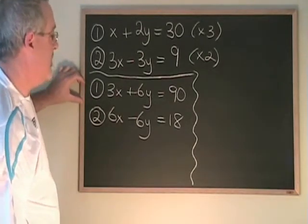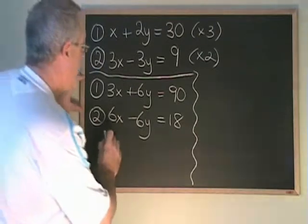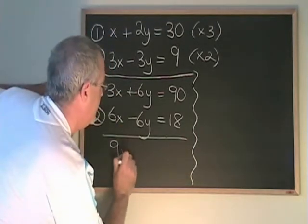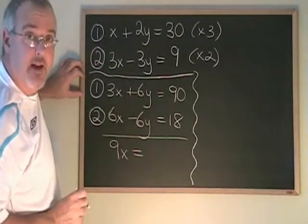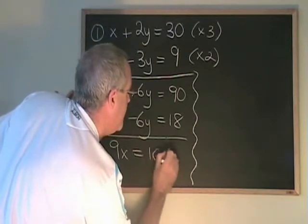Now we have the equal and opposite situations, so we can do our elimination through addition. 3x plus 6x is 9x. 6y plus negative 6y cancels, and 90 plus 18 is 108.